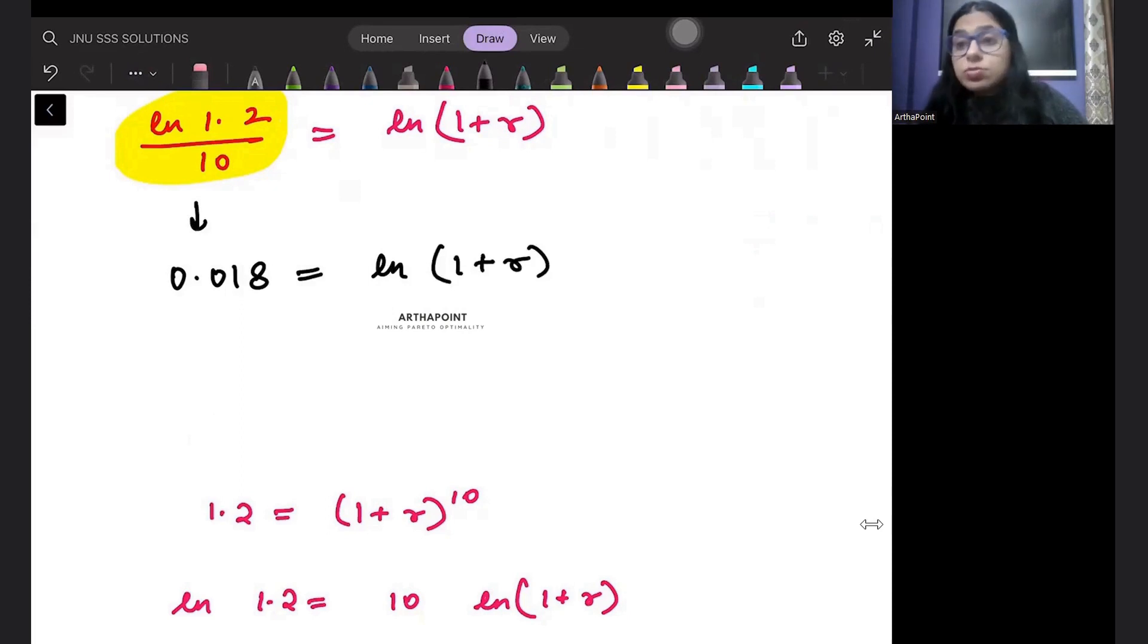Now, in order to remove log, if I want to remove log, I will take it to the base e. So e to the power 0.018 will be 1 plus R. From here, my R will be e to the power 0.018 minus 1.